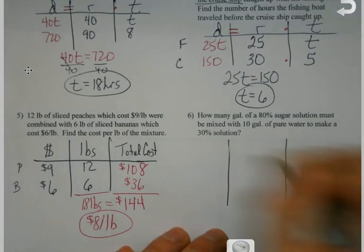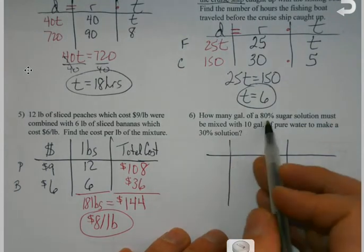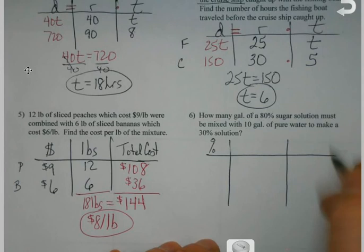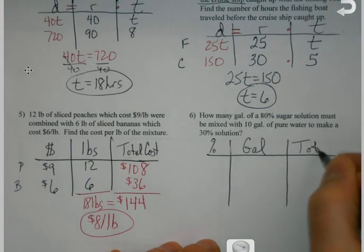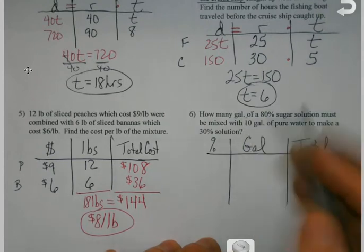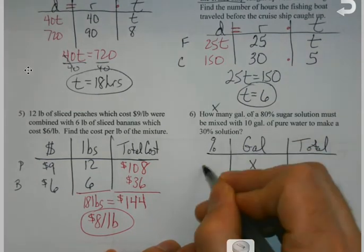Same setup for the last one even though it looks different. How many gallons of an 80% sugar solution? Okay, so we're going to have these percentages. We're going to have gallons. We'll go back to total here again. So how many gallons? How many? X, don't know. 80%. Now here's the kicker.